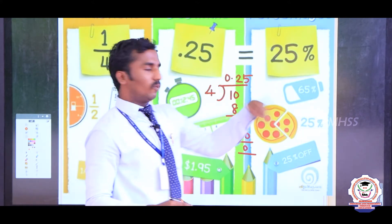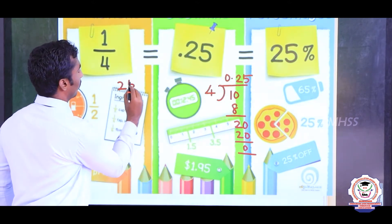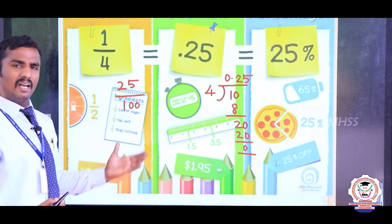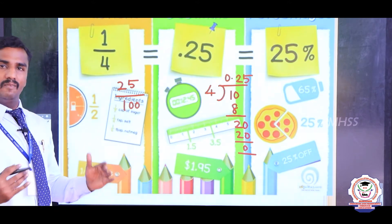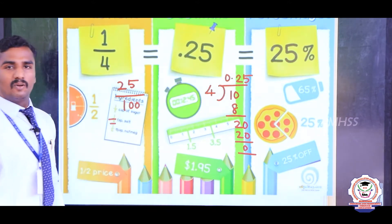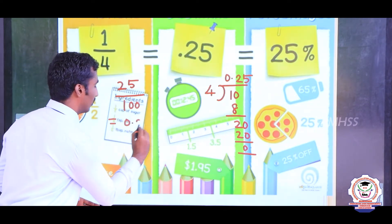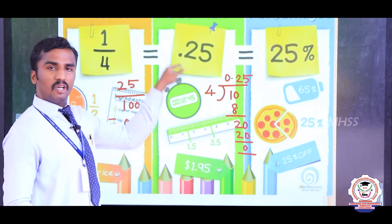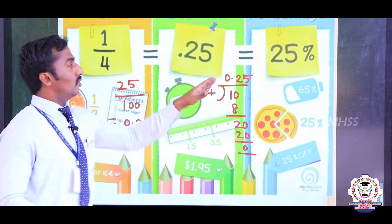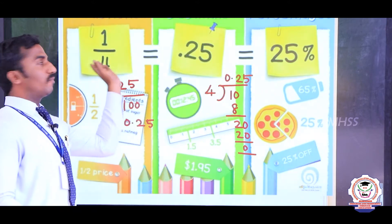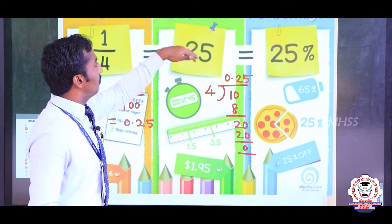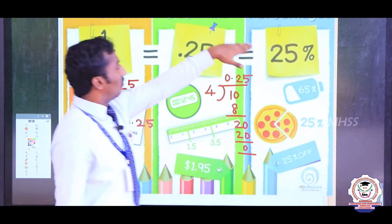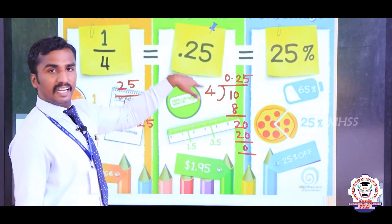Next: 25 percent means 25 divided by 100, because every percentage value has denominator 100. 25 divided by 100 equals 0.25. So, 1 by 4 equals 0.25, which equals 25 percent. Percentage converting into fraction, fraction converting into decimal — or decimal converting into fraction, fraction converting into percentage.